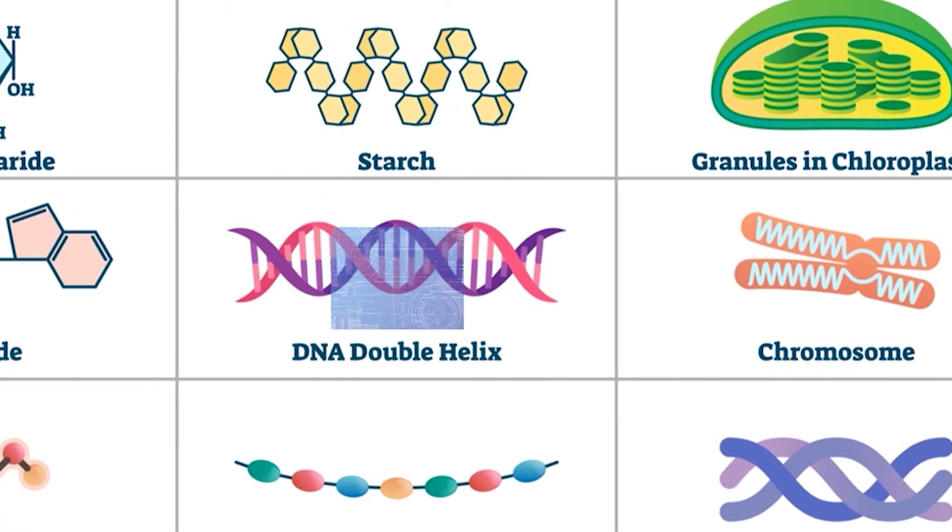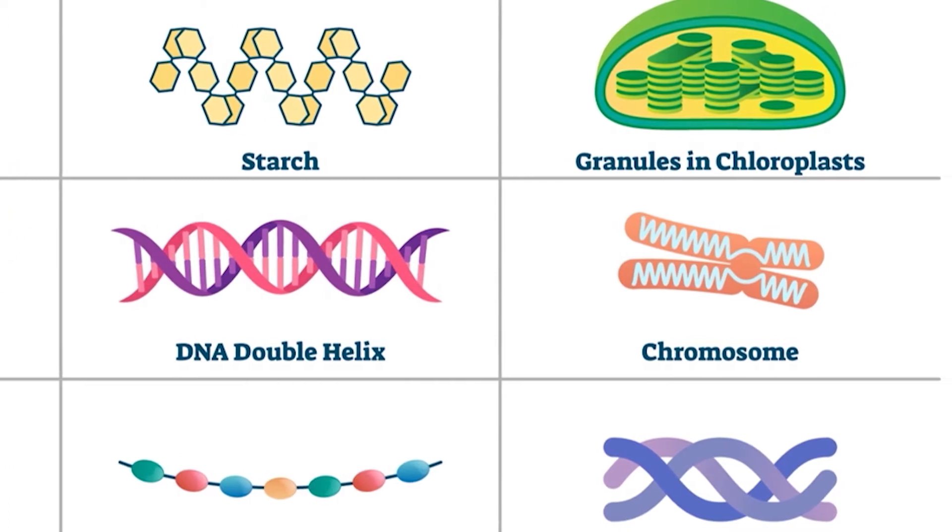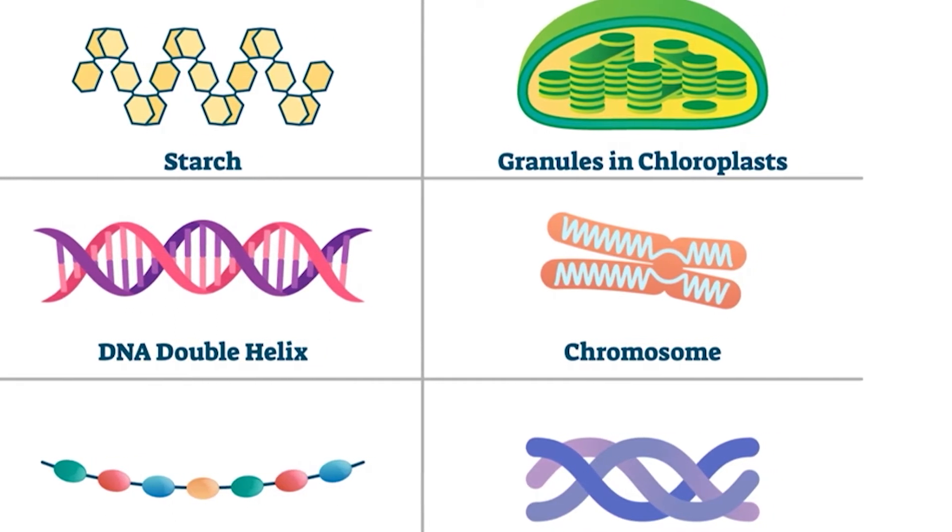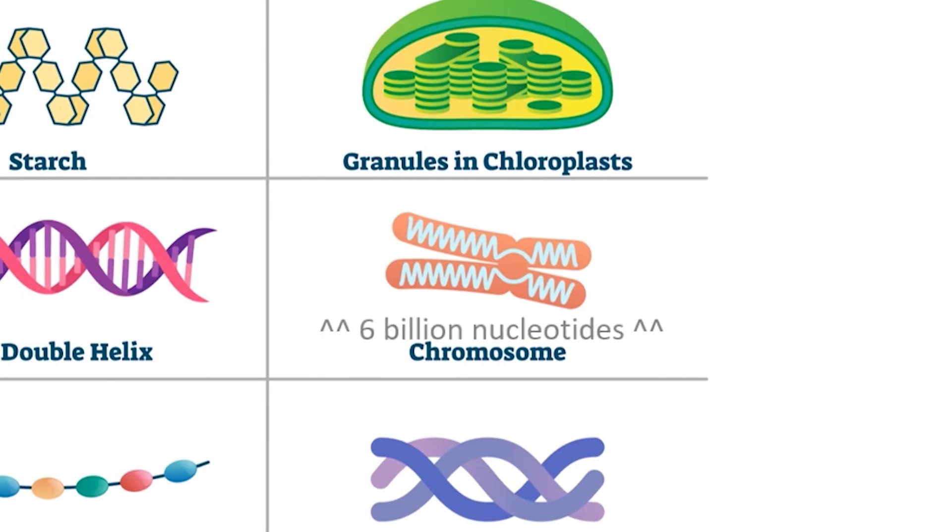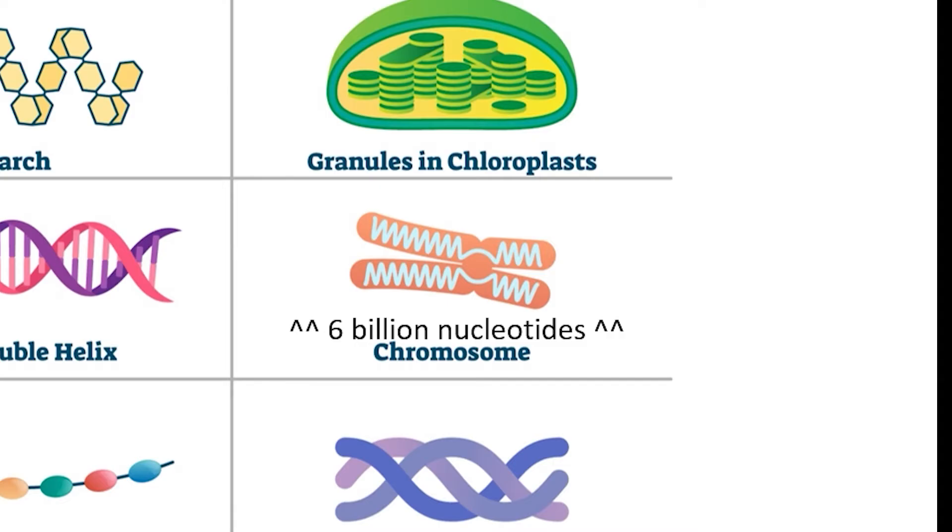Each eukaryotic cell has several chromosomes, which are individual molecules that carry genetic information. For instance, each human cell contains 46 chromosomes made of around 6 billion nucleotides. This allows each cell to carry all of the information needed to create your body.